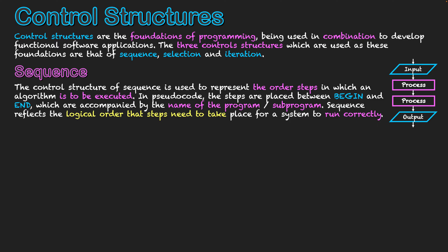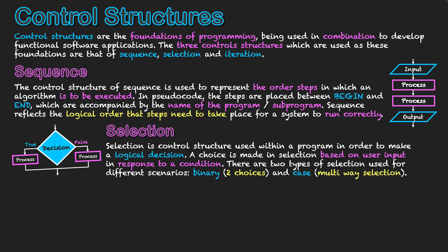The next control structure we're going to look at is that of selection. This control structure is used within a program in order to make a logical decision. A choice is made in selection based on user input in response to a condition. So a condition means there has to be some sort of element satisfied. It could be being greater than a specific value, or it has to be equal to a specific type of text for a condition to be satisfied.